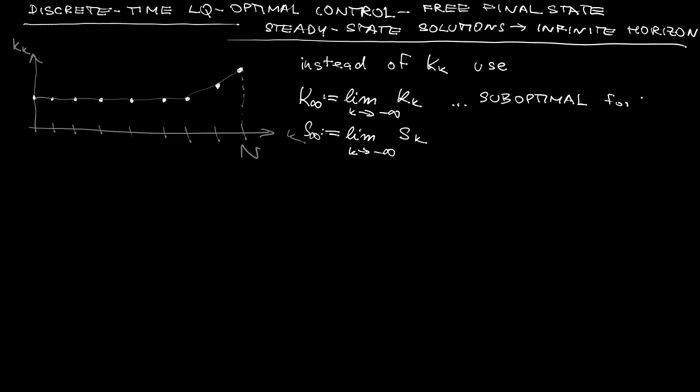Such constant solution will be of course only suboptimal on a finite horizon but it will be perfectly optimal on an infinite horizon. That means for N is equal to infinity.